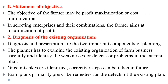Step 2 is diagnosis of the existing organization. Diagnosis and prescription are two important components of planning. The planner must carefully examine the existing organization of the farm business and identify weaknesses, defects, or problems in the current plan.